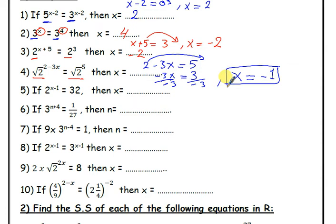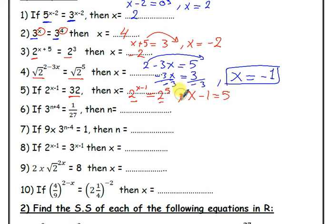Exercise 5: 2 to the power x minus 1 equal 32. We can convert 32 as 2 to the power 5. Now same base, equal powers: x minus 1 equal 5, so x equals 6.